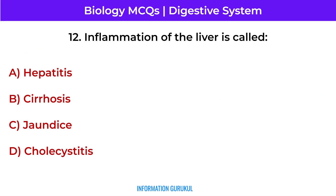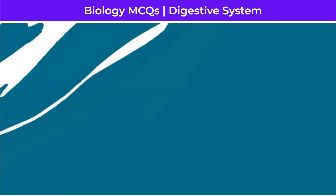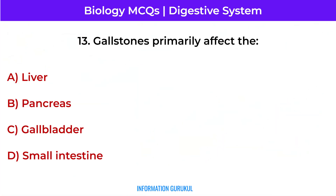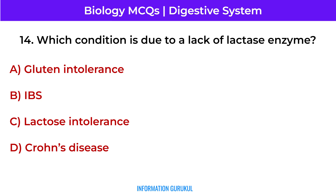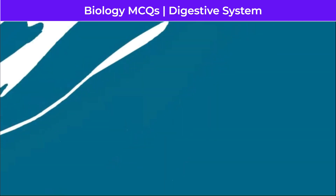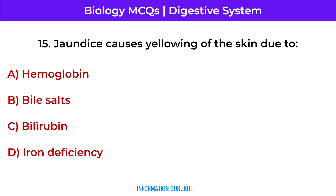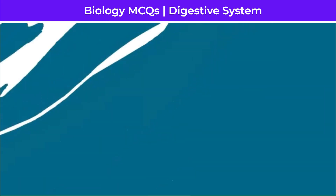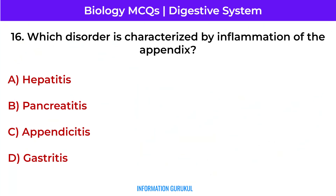Inflammation of the liver is called hepatitis. Gallstones primarily affect the gallbladder. Which condition is due to a lack of lactase enzyme? Lactose intolerance. Jaundice causes yellowing of the skin due to bilirubin. Which disorder is characterized by inflammation of the appendix? Appendicitis.